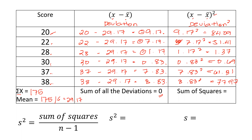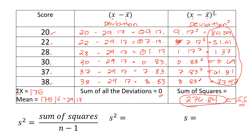Now let's add all the squared deviations. When you get the total of all of these values, you get 276.84. This value, 276.84, was obtained by adding all the squared deviations, which is why this value is known as the SS, or the sum of squares. SS stands for sum of squares. We need the sum of squares in computing for the variance.